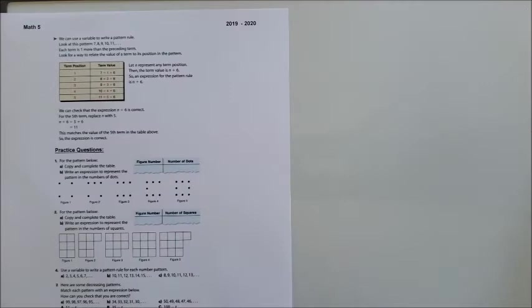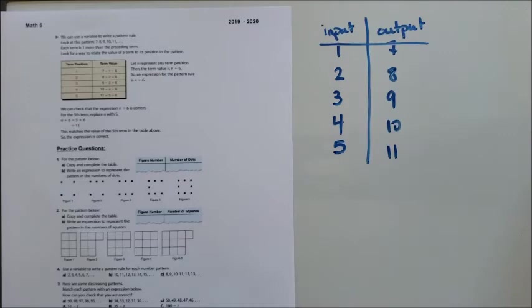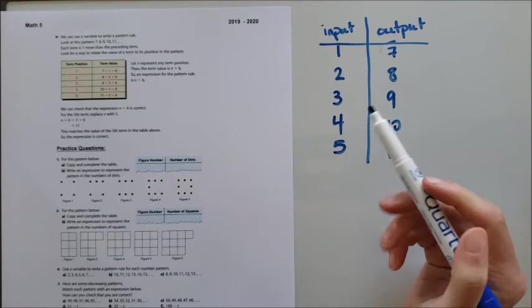So as I go through that table, seven, eight, nine, 10, 11, we know that it's going up by one each time. So I'm just going to quickly jot this table down. And so when I'm going through this, I'm going to look for what's happening.